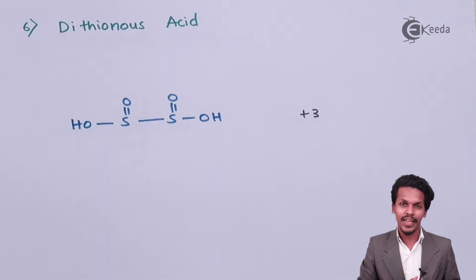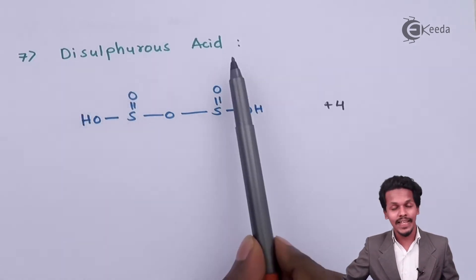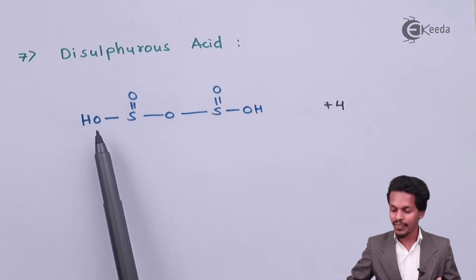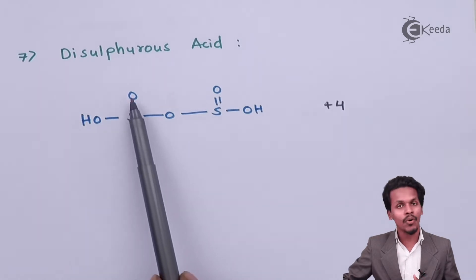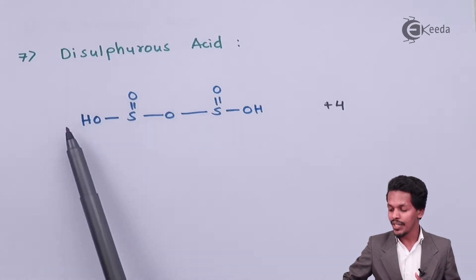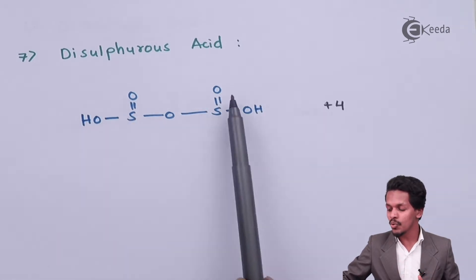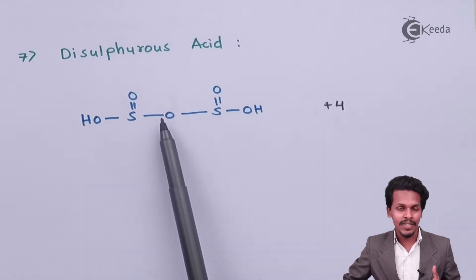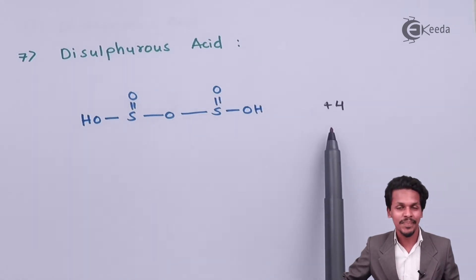The next is dithionous acid — it is very similar to the previous one. Sulfur is attached via a double bond to oxygen, and an OH group is also present; the same group appears on both sides. The only difference is that these two groups are connected by an oxygen atom, and the oxidation state of sulfur is +4.